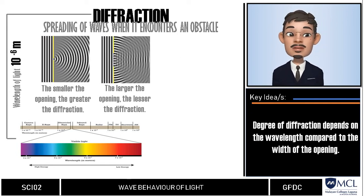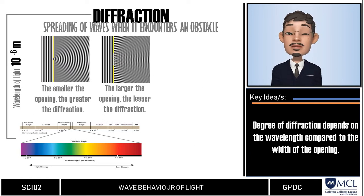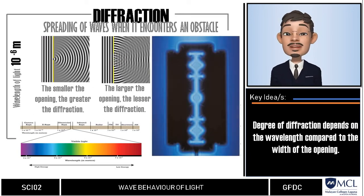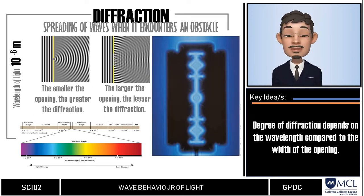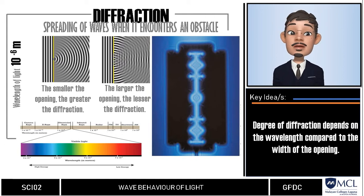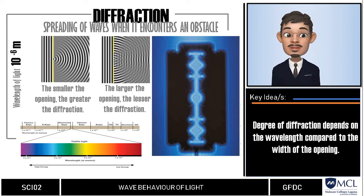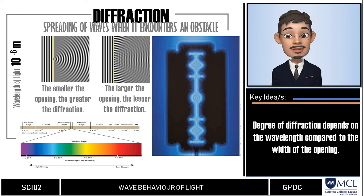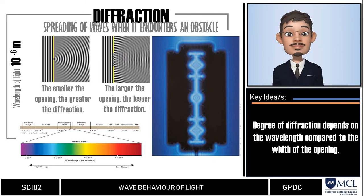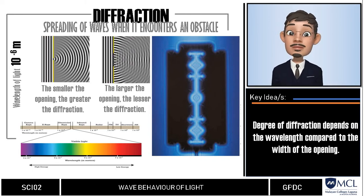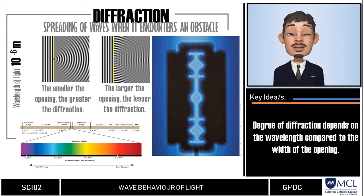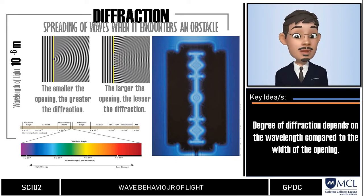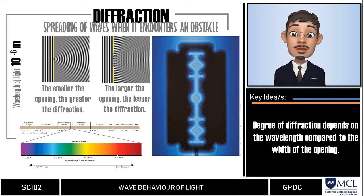Some light diffraction does occur at corners, but it goes largely unnoticed because it is difficult to see. If we inspect an object — say this razor blade here — using special lighting very closely, we see that the shadow boundary is blurred or fuzzy, and there is actually a pattern of bright and dark regions. This is an indication that some diffraction of light has occurred.